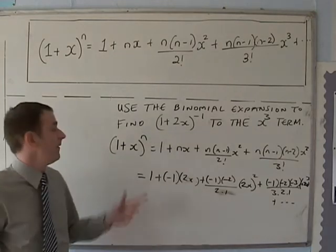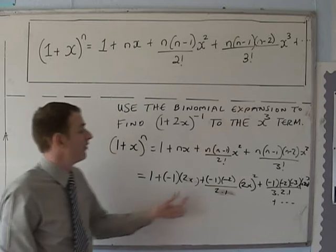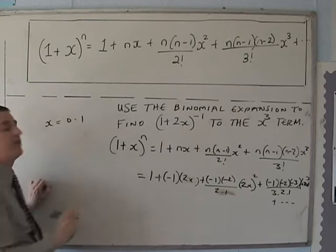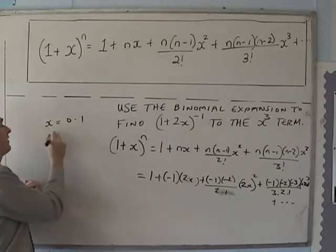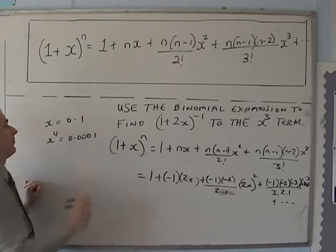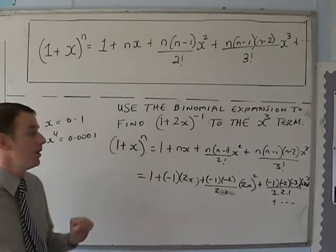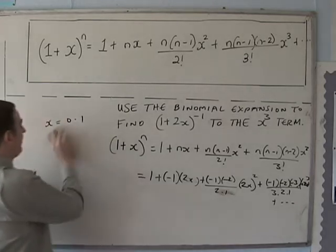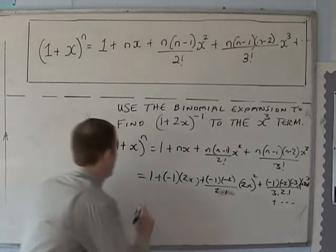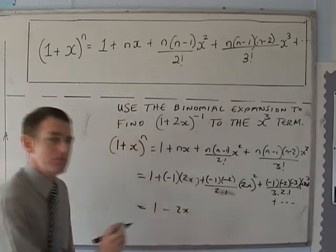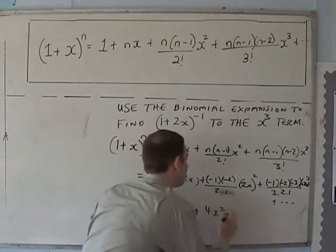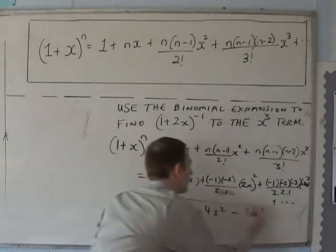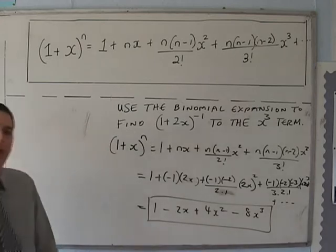Normally the x part is going to be quite small. So by the time we get to x to the power of 4 — for example if x equals 0.1, then x to the power of 4 is going to be very, very small. So in an exam we normally work out just up to the x cubed term, and continuing the calculation we get the expansion up to the x cubed term.